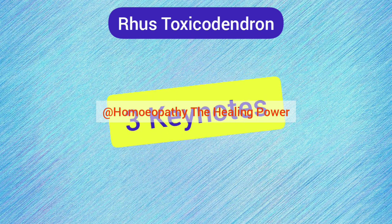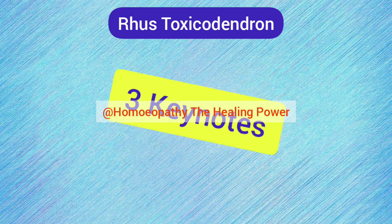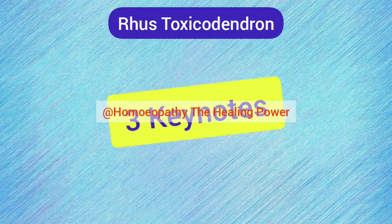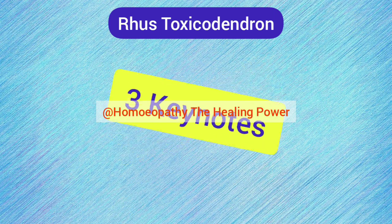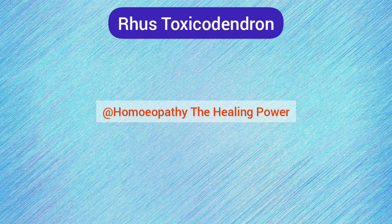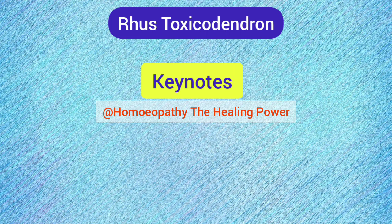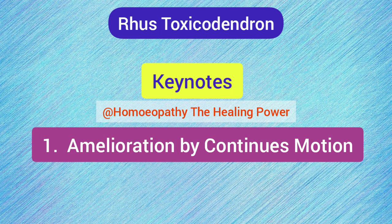There are three most important keynotes of Rhus Tox — the most important and unique differentiating symptoms. Number one is the unique modality: amelioration by continuous motion. This modality runs in Rhus Tox from start to end. Whether the patient feels pain and stiffness in the back, or any other complaint, moving about continuously brings relief.